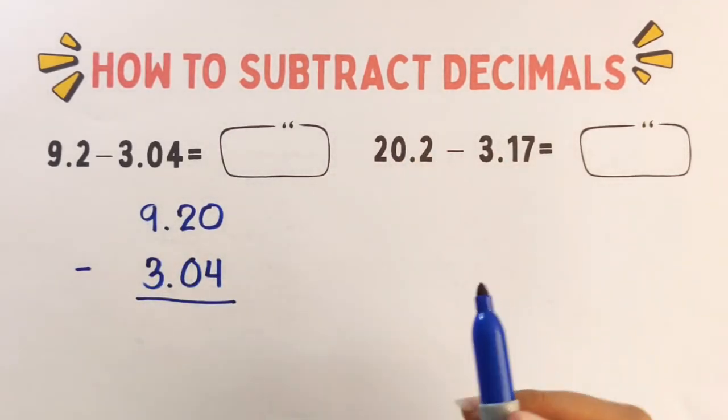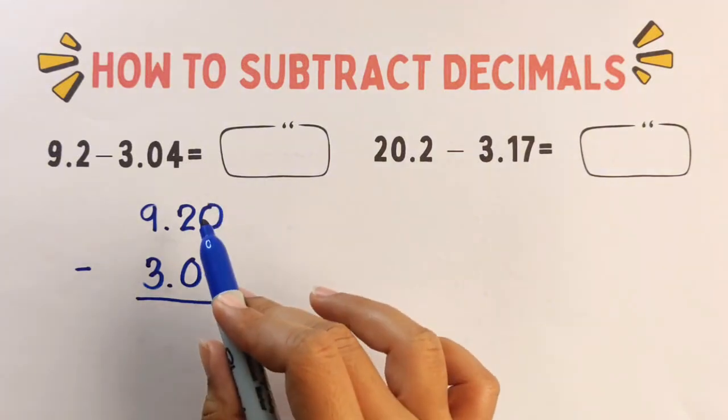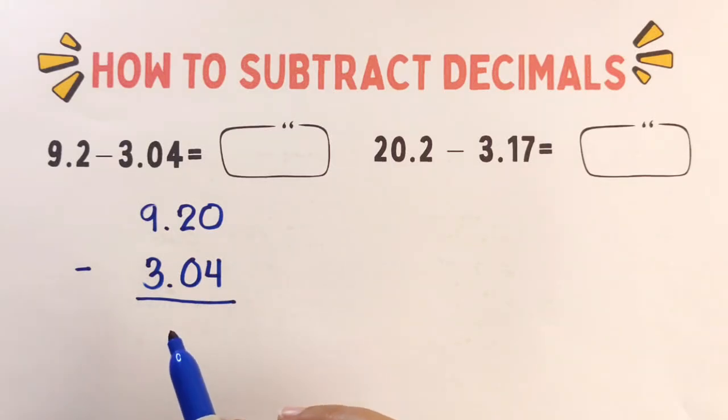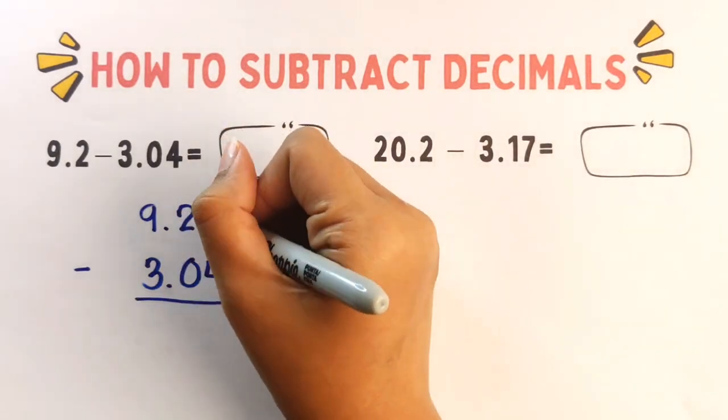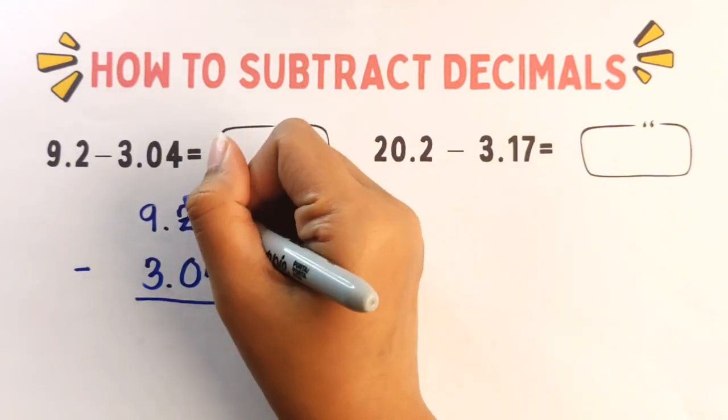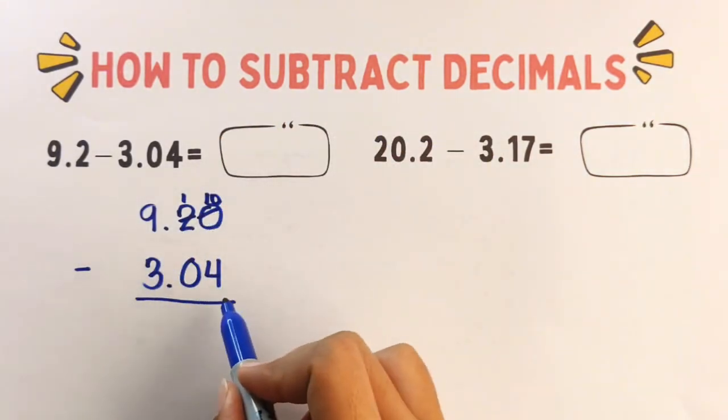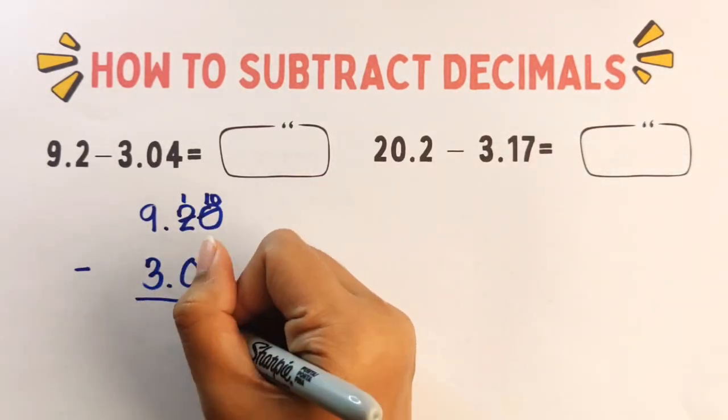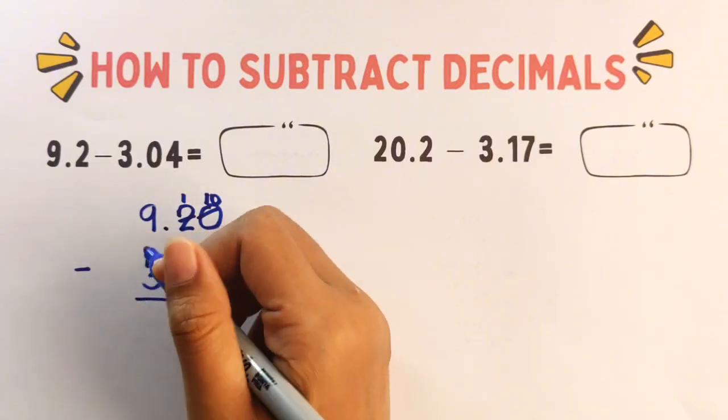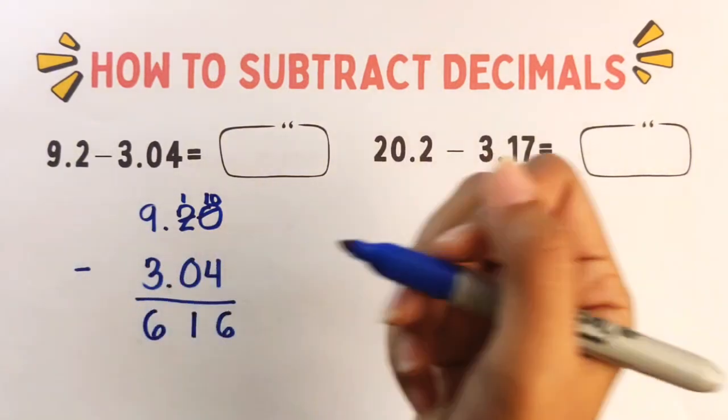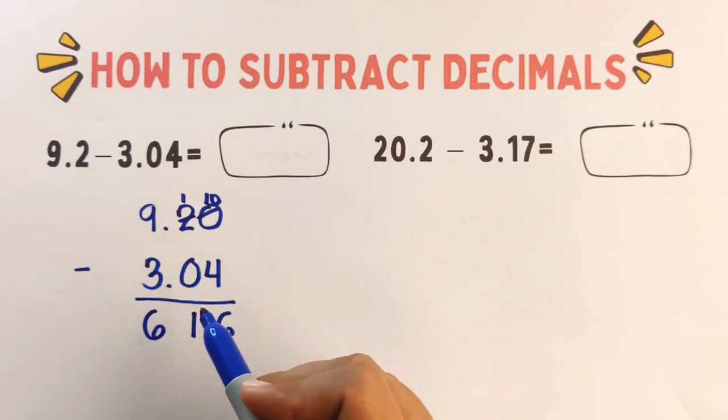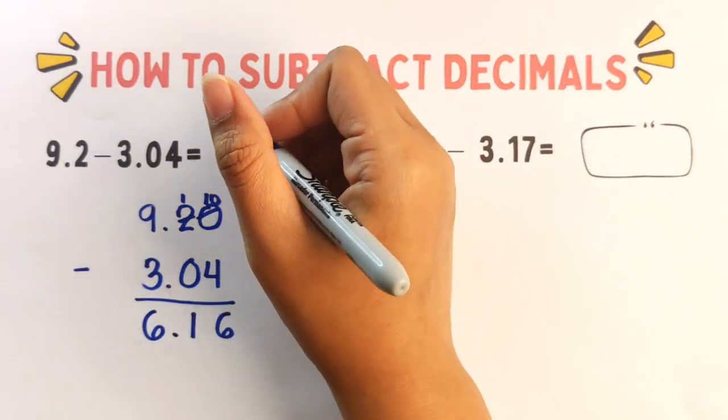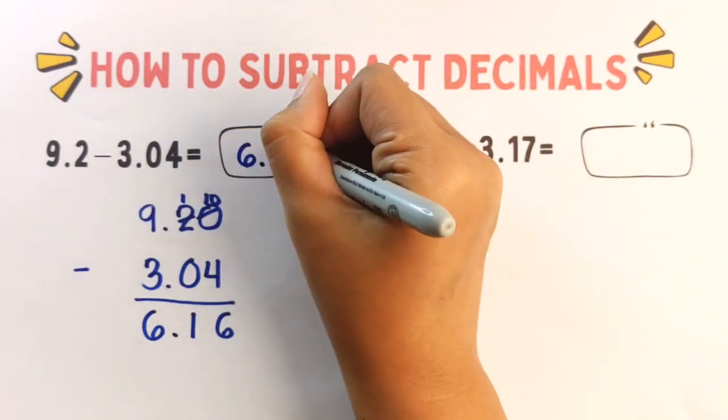Step number two, subtract starting from the right. So 0 minus 4, we borrow 1 from the 10th place. So it would be 10 and 1. So 10 minus 4, the answer is 6. Then 1 minus 0 is 1. 9 minus 3 is 6. And then step number three, bring down the decimal point. So the final answer is 6.16.